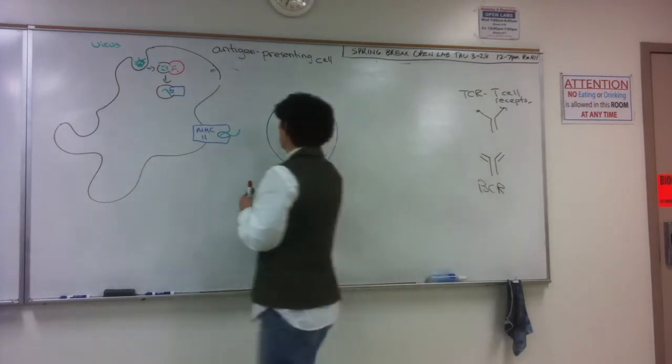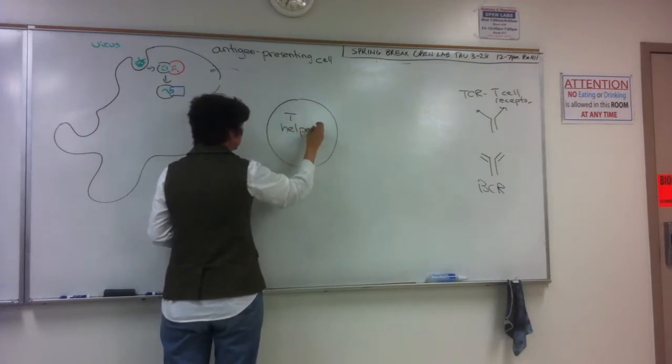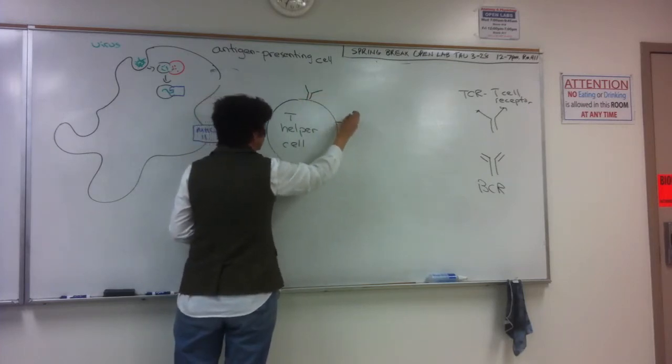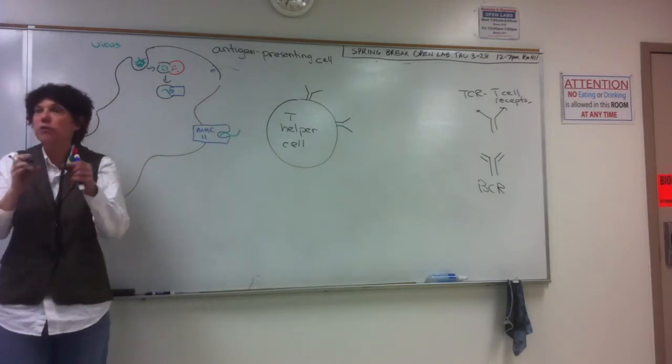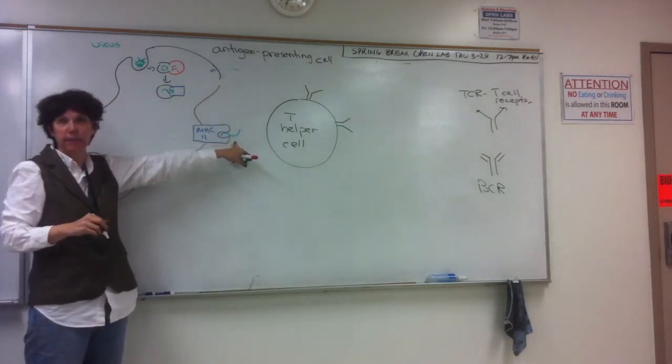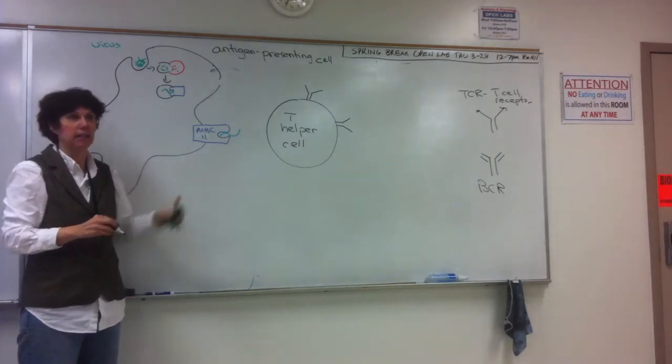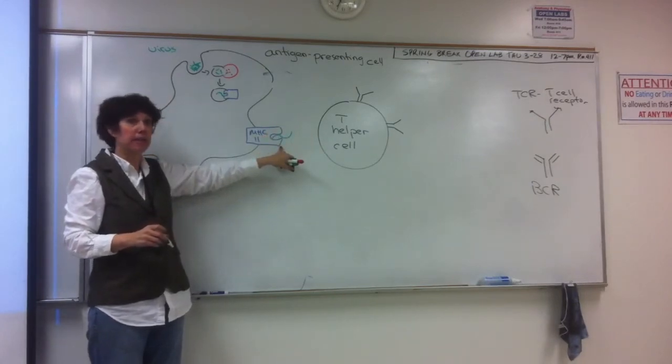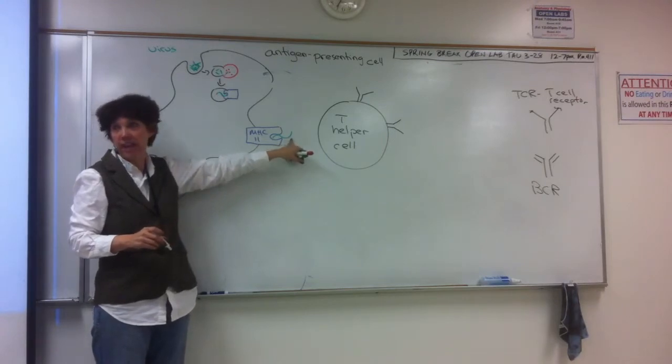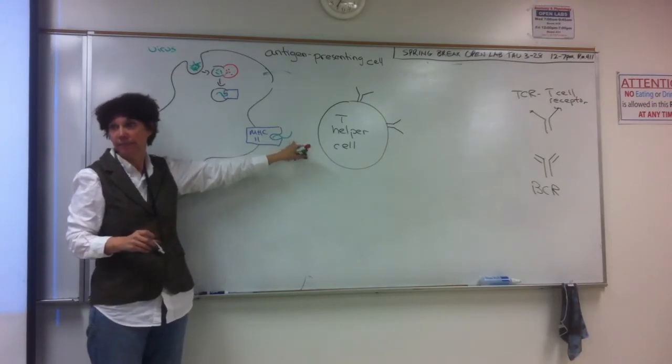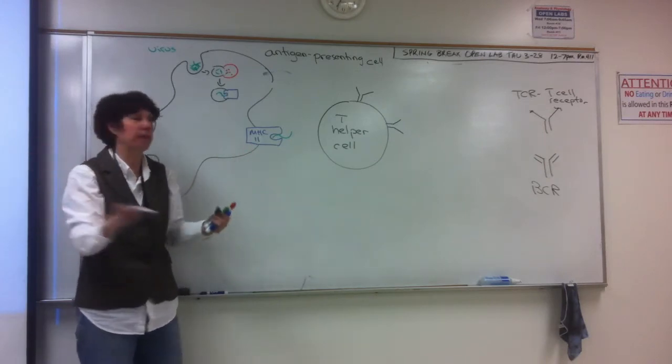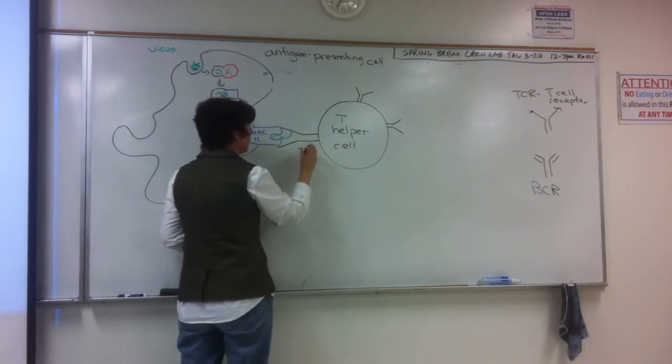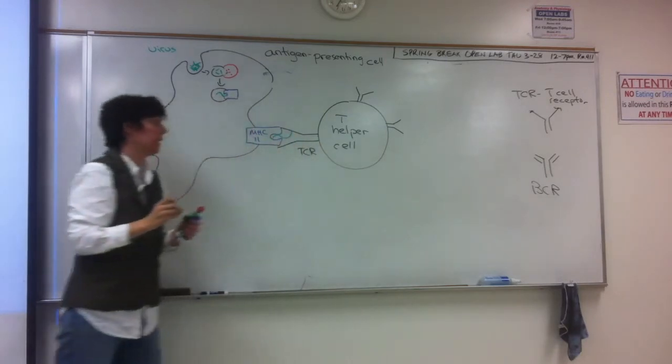So, on our T-helper cell, we have T-cell receptors that, on this particular cell, are unique to this viral epitope, the antigenic determinant on this molecule right here. So, not only do they recognize the MHC-2, but they will only bind with this MHC-2 with that particular exogenous peptide. So, by chance, they just randomly happen to bump into this, we have our T-cell receptor interacting with the MHC-2 molecule.